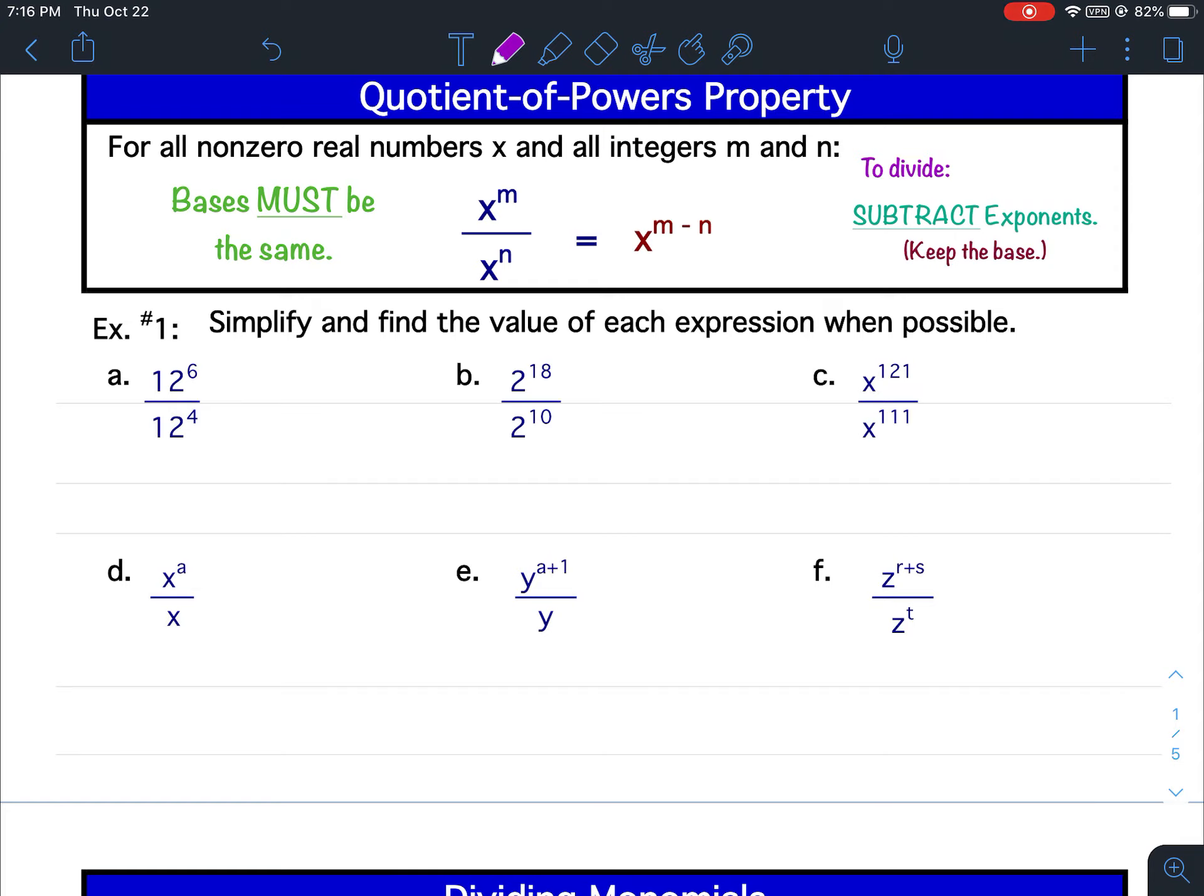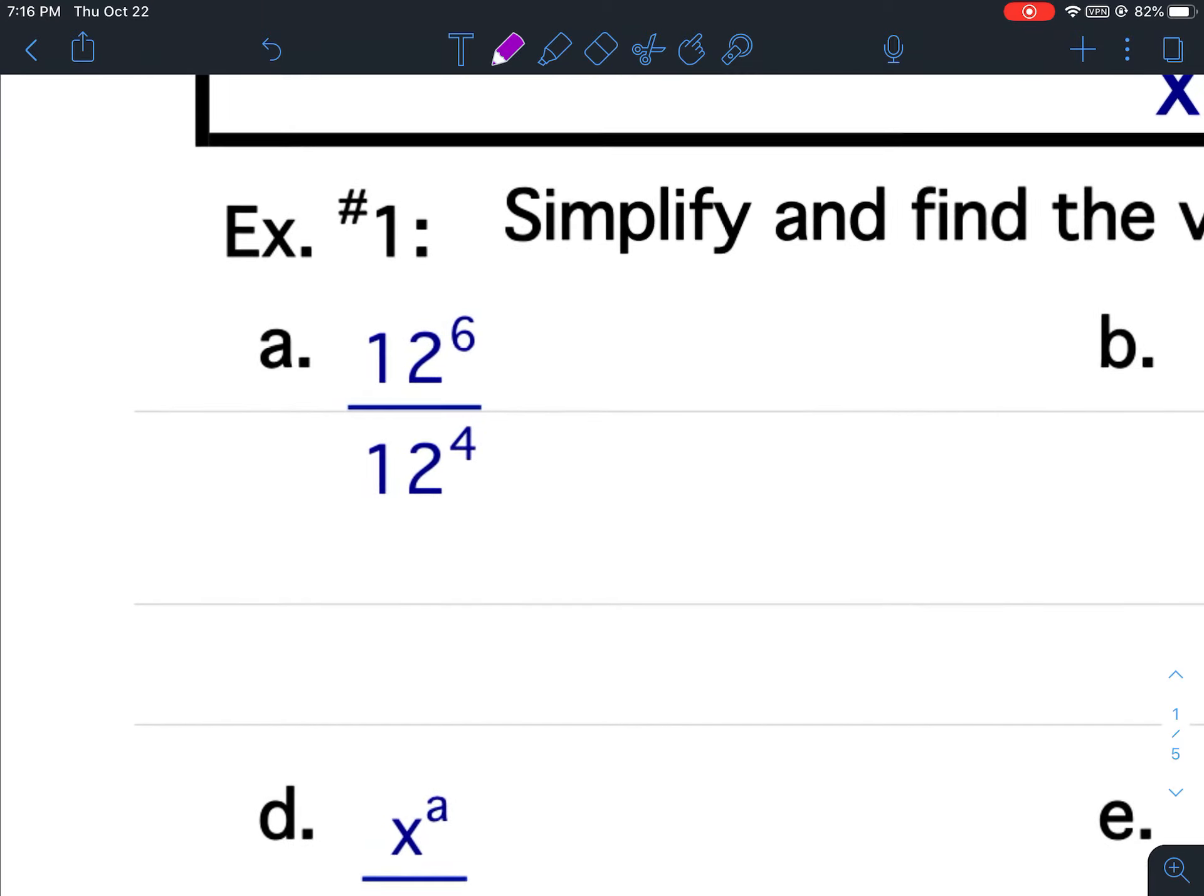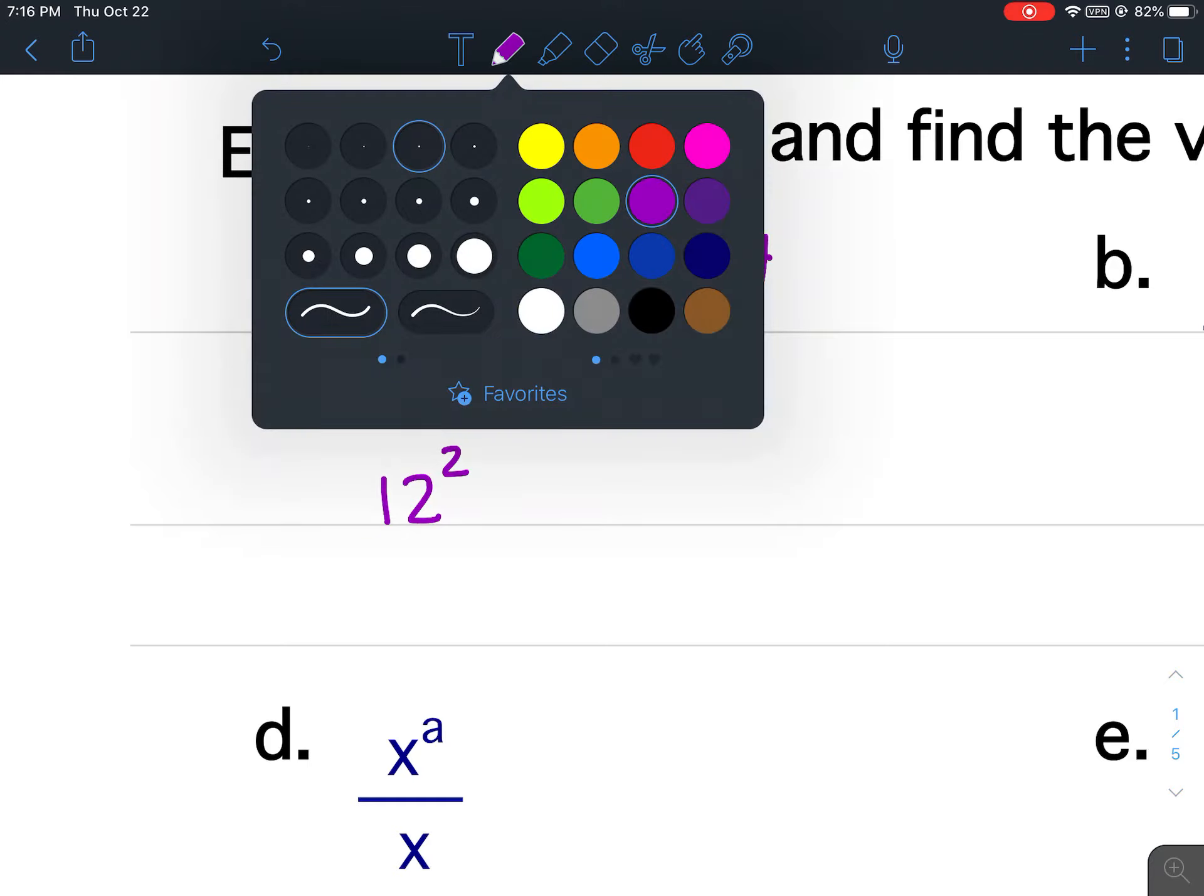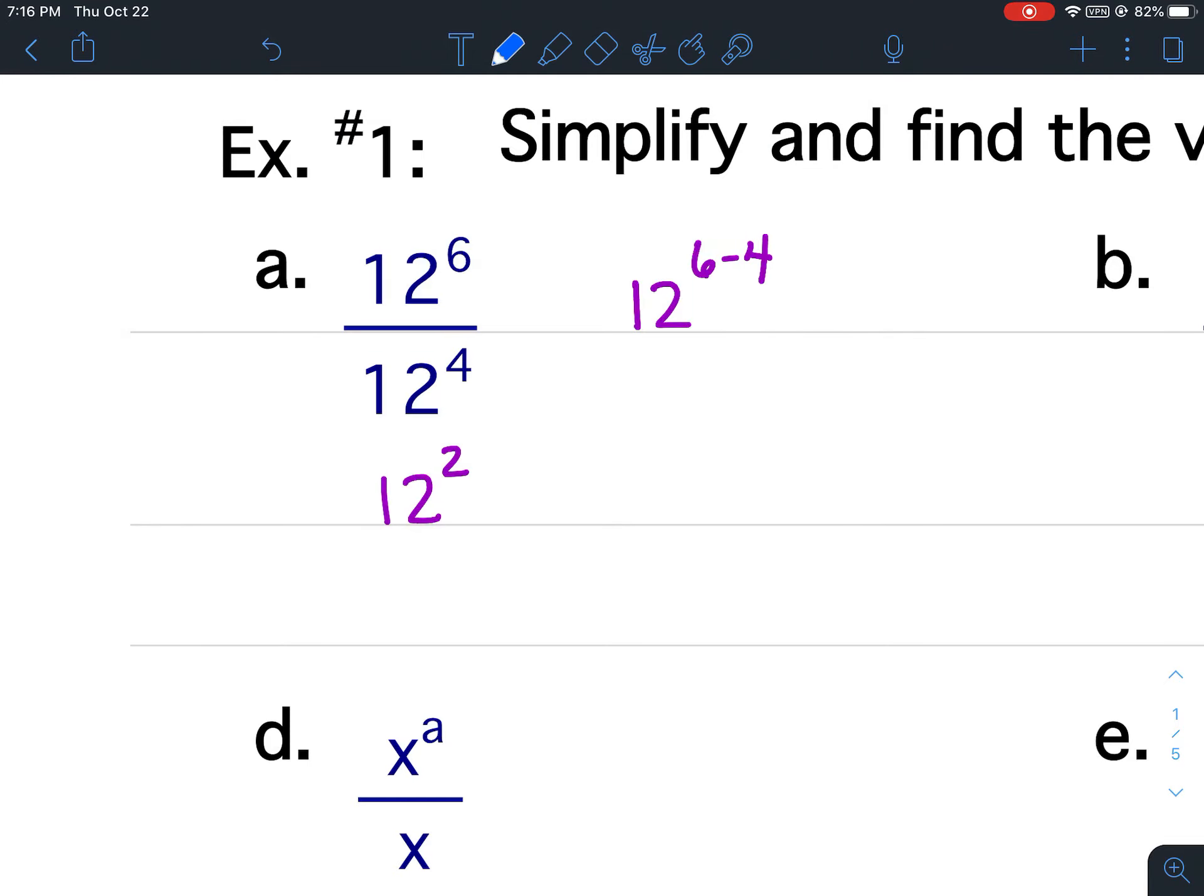So again, the quotient of powers property says when you're dividing you subtract exponents. So let's look at example a. I got 12 to the 6 divided by 12 to the 4th. Off to the side please write 12 to the 6 minus 4. 6 minus 4 is 2, so this would be 12 squared. So then you would put 12 squared into your calculator and if you did that, 12 times 12 is 144.